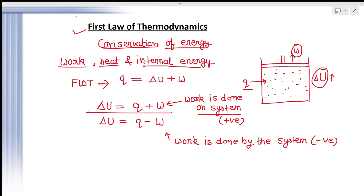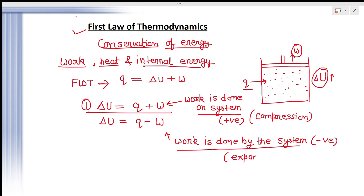Positive work here means work done on the system, also called compression work. When dealing with compression work we use the first formula; when work is done by the system (expansion work) we use the other formula. Overall, q, ΔU, and W interconvert into each other with no destruction of energy — energy in total is conserved. This is the basis of the first law.